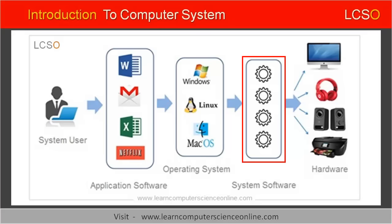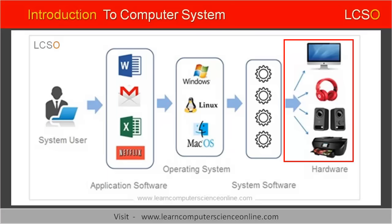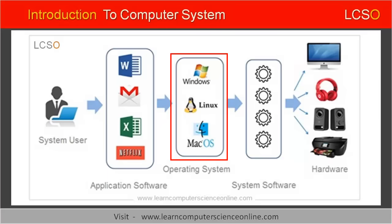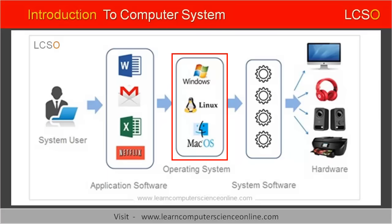The system software is a special type of software that is internally used by the computer itself to manage and operate the various hardware components connected to the system. The operating system is the most important system software used by the computer. The operating system basically provides an interface to the user to interact with the system.